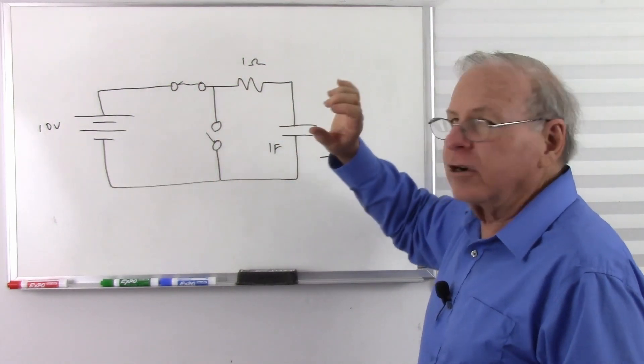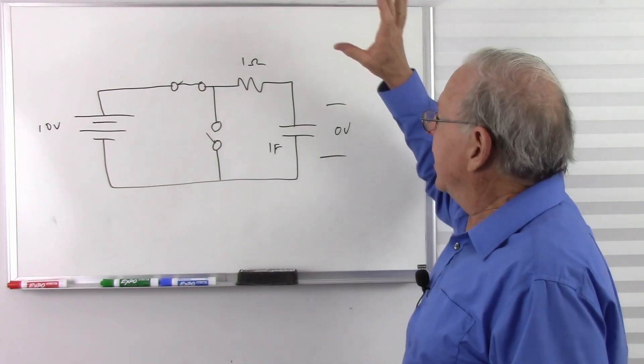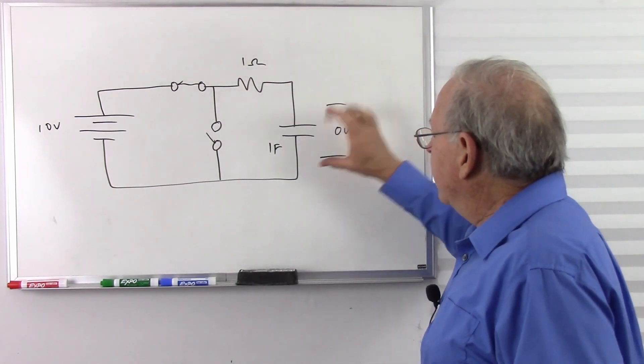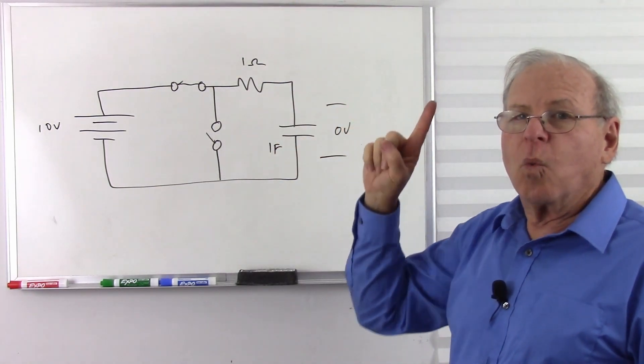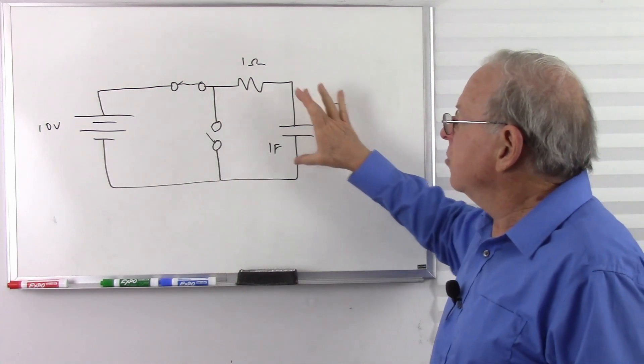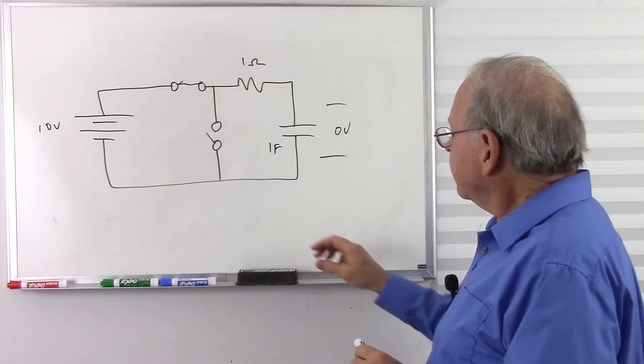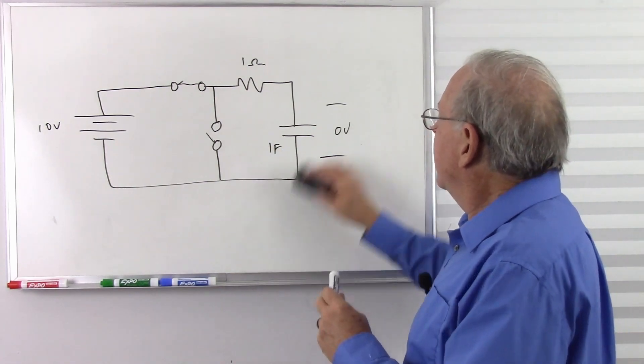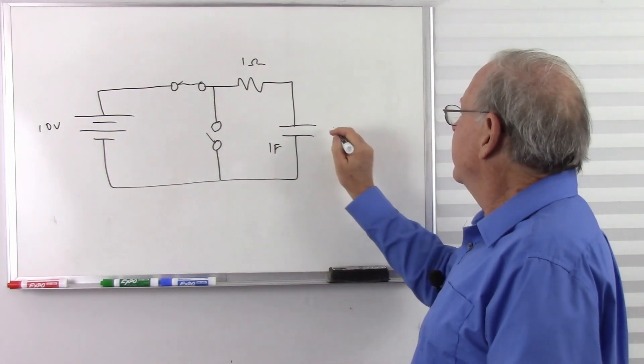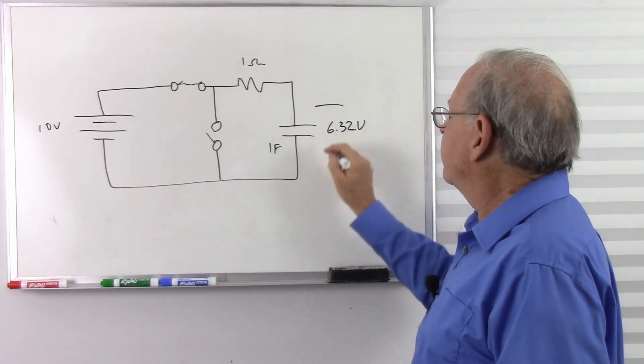The capacitor time constant, if we have 1 ohm and 1 farad, it will take 1 second for this voltage to reach 63.2% of that voltage. So we close the switch, and after 1 second, what do we have? 6.32 volts across the capacitor.